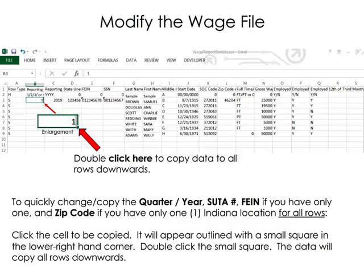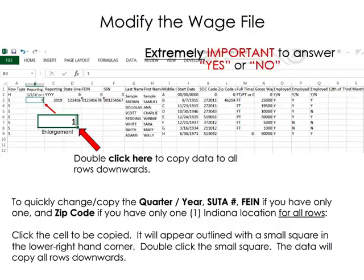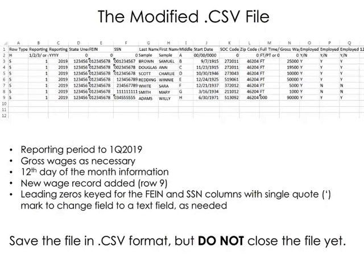Employment and wage record data impacts important economic statistics that are used in part to measure the overall economy. The accuracy of these economic indicators relies on proper employment reporting. It is extremely important to answer yes or no in columns O, P, and Q. Responses here will provide information that tells us if the worker received compensation during the pay period containing the twelfth day of the first, second, and third month of the quarter. In this example, the template has been updated with the first quarter of 2019 wage record data, and the wage records have been modified as shown.